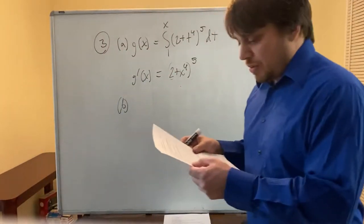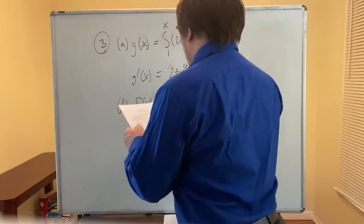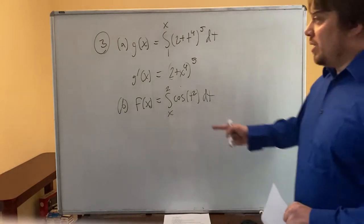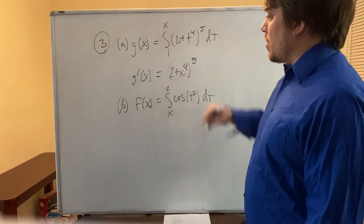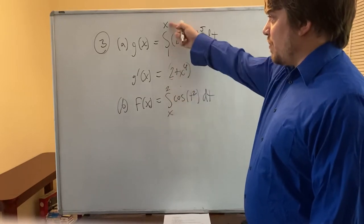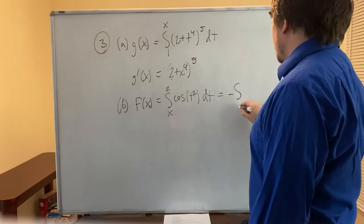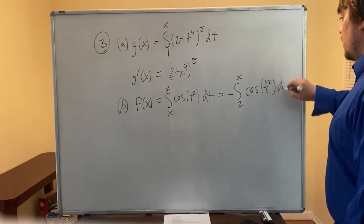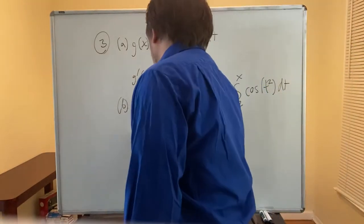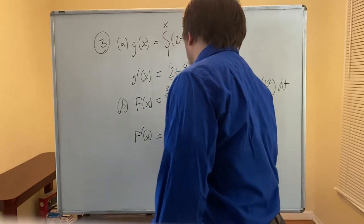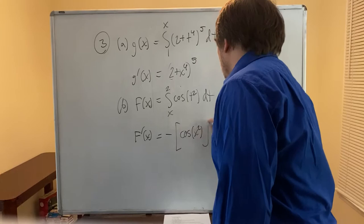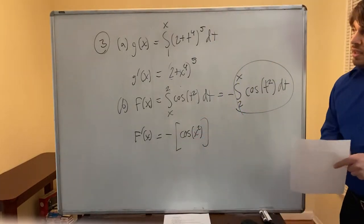For 3b, F(x) = the definite integral from x to 2 of cos(t²) dt. Here x is in the lower limit and 2 is in the upper limit. We need to fix that by negating: F(x) = −∫₂ˣ cos(t²) dt. Now applying the Fundamental Theorem of Calculus, F′(x) = −cos(x²). That's the answer.